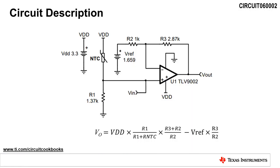This schematic represents a temperature sensing circuit for an NTC thermistor. An NTC thermistor has a negative temperature coefficient, which means its resistance decreases with temperature. A resistor in series with an NTC thermistor forms a resistor divider. A change in temperature changes the NTC resistance, which changes the input voltage, VIN.